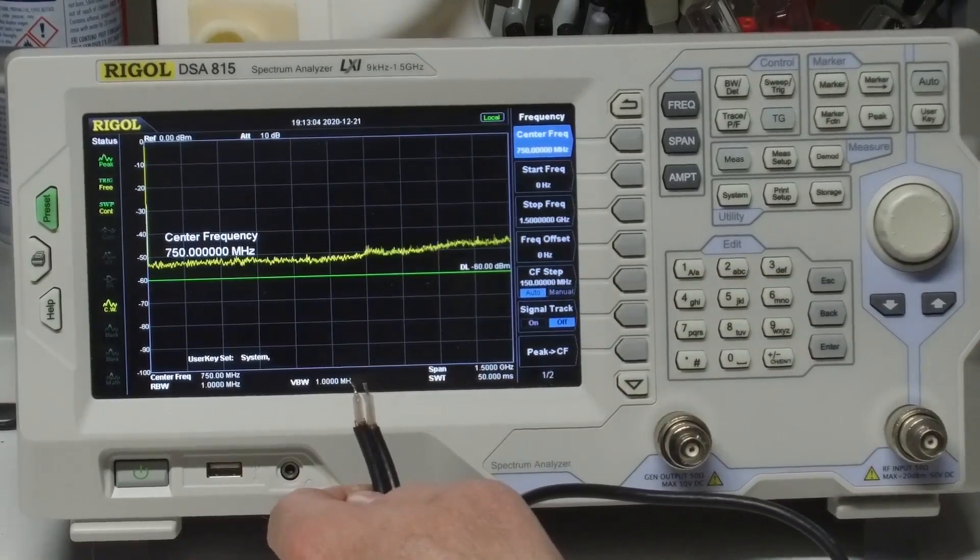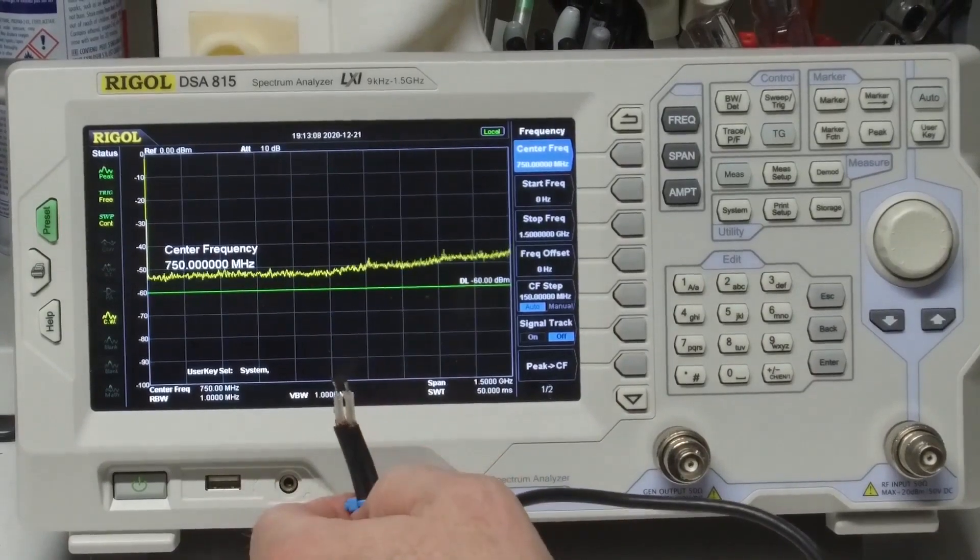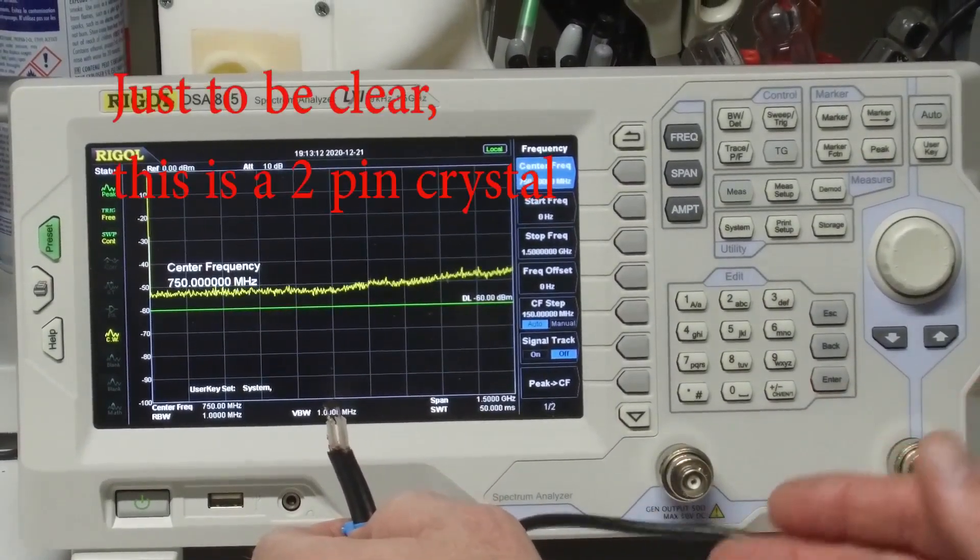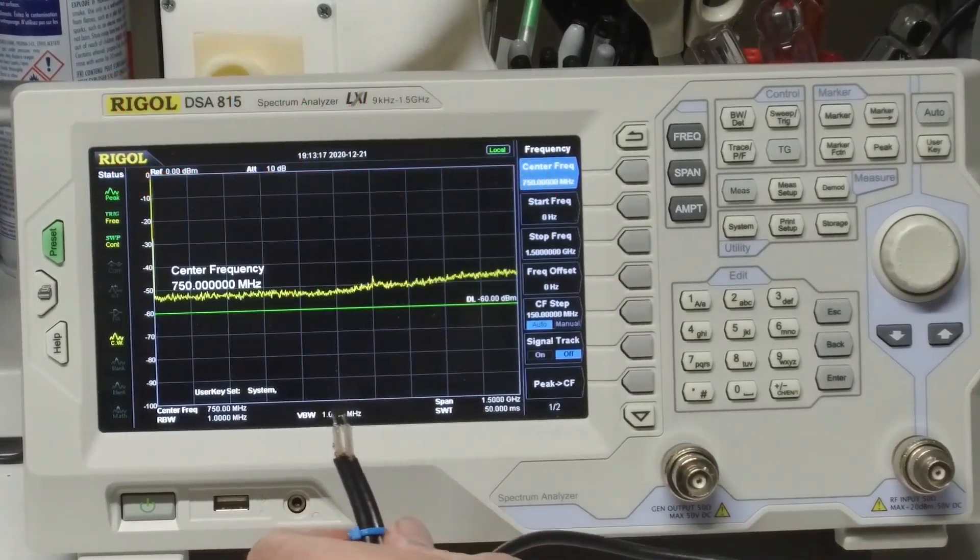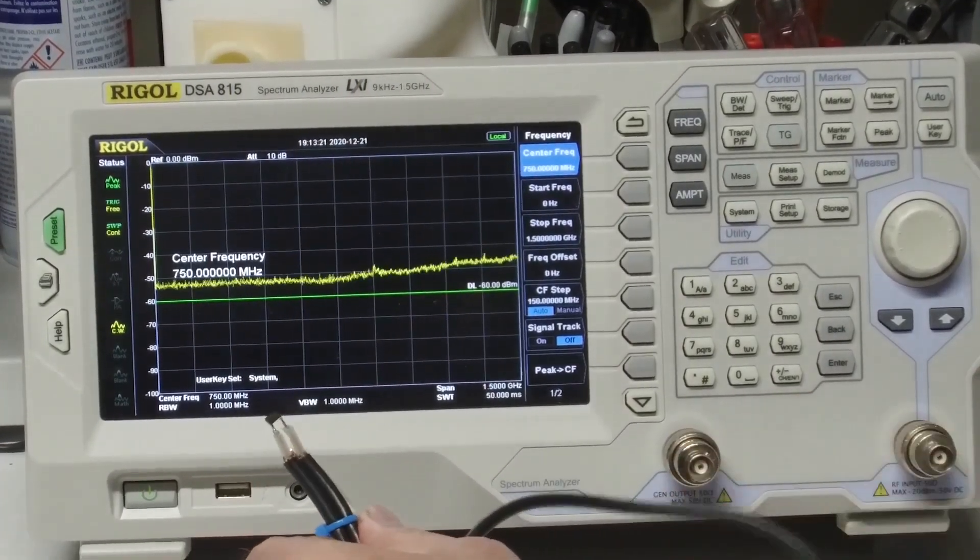So I was thinking about how I could measure the frequency of this oscillator without having to solder it onto a board or making a circuit to make it run. So I decided to hook it up to the spectrum analyzer and I thought I'd show this information.